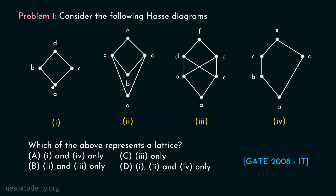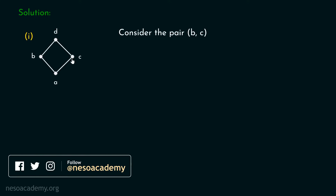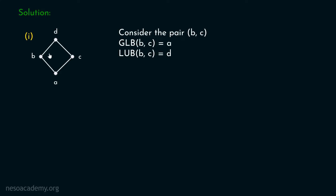First, we will identify whether this Hasse diagram is a lattice or not. Consider the pair B, C. Let's find the greatest lower bound and least upper bound of these two elements. Greatest lower bound of B, C is obviously A — there is no doubt about this; they meet at this point. And the least upper bound of B, C is D. If we trace the path up from these two vertices, we can find that they meet at this particular point. Therefore, least upper bound of B, C is D. It is clear that the given Hasse diagram is a lattice.